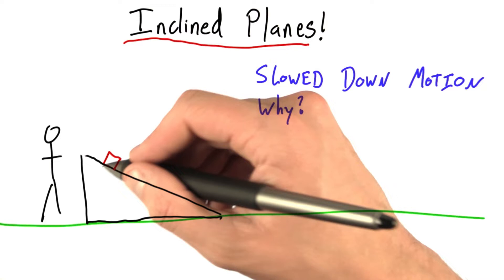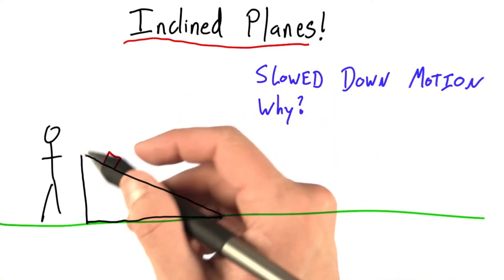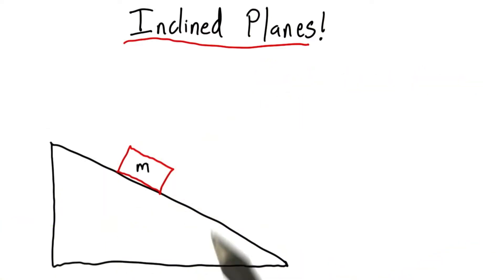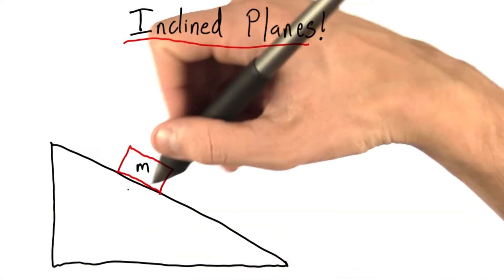Instead of rolling balls, let's imagine sliding blocks, because the physics of rolling is slightly more complicated than I want to get into right now. So we're zoomed in now, and here's our block, and it has mass m.